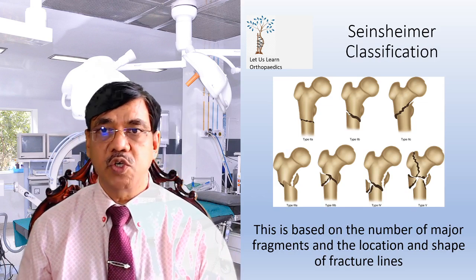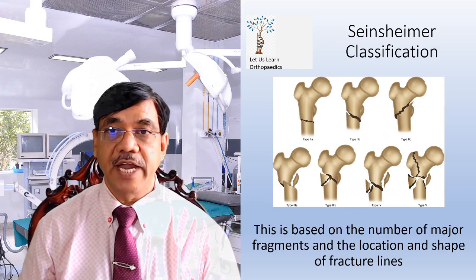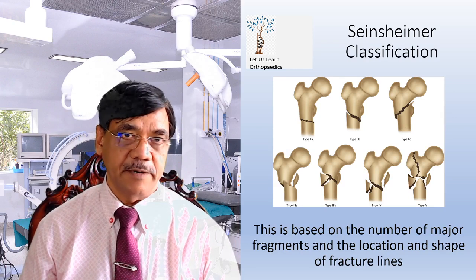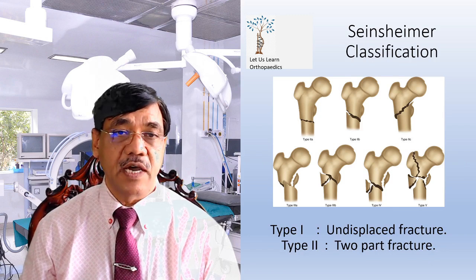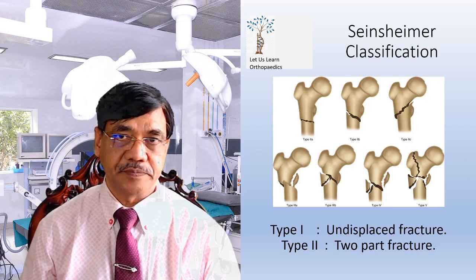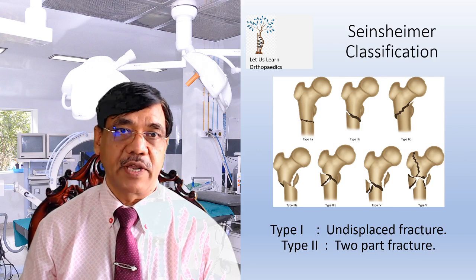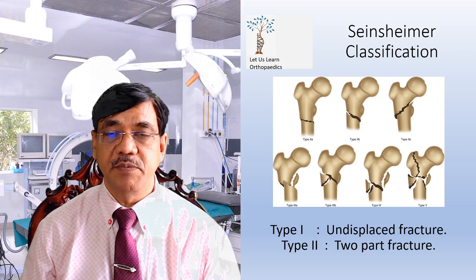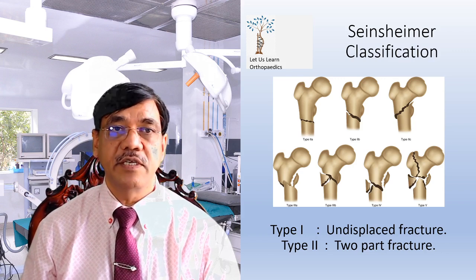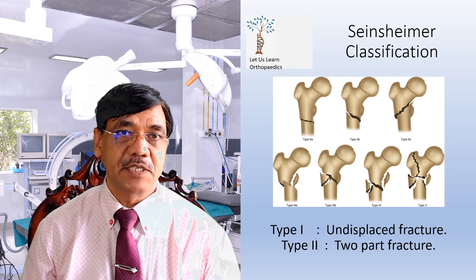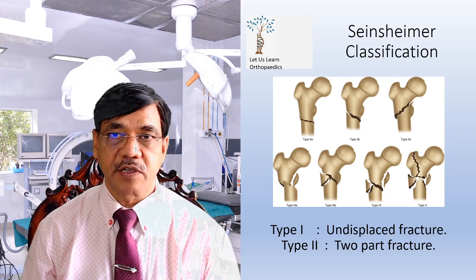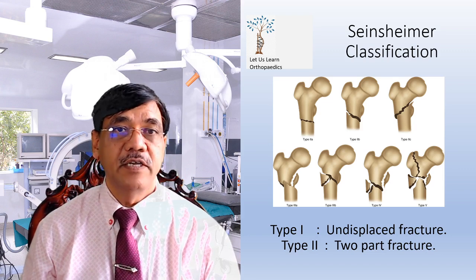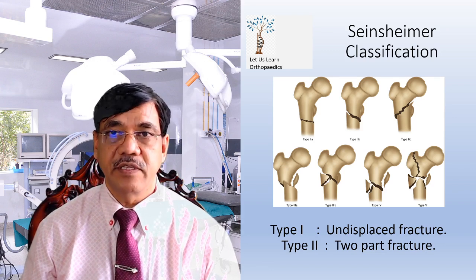Seinsheimer's classification is based on the number of major fragments and the location and shape of the fracture line. Type 1 fractures are undisplaced. Type 2 are two-part fractures, further subdivided into three categories: minimal displacement, more displacement with lesser trochanter in the proximal fragment, and Type 2C where the lesser trochanter remains with the distal fragment.